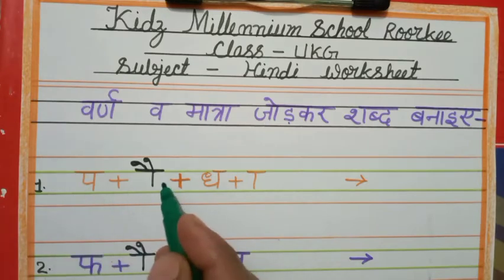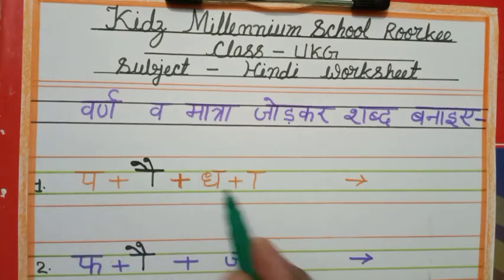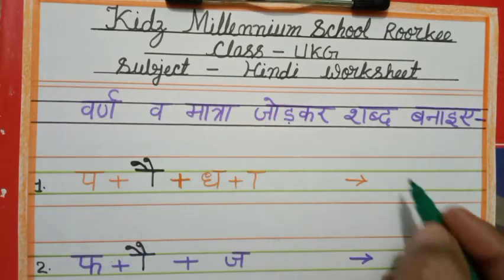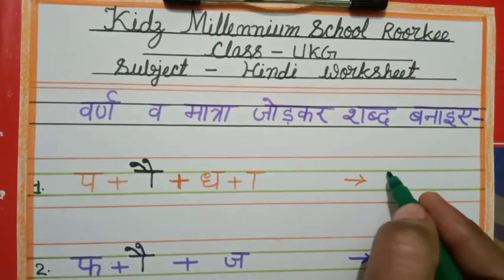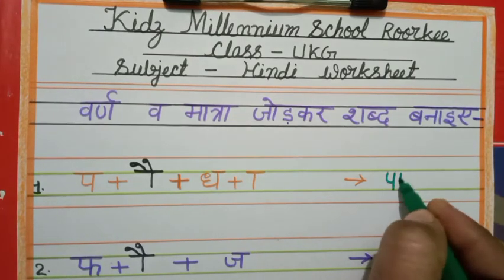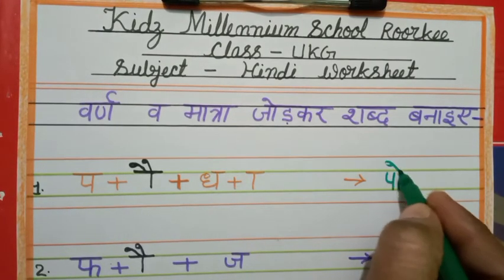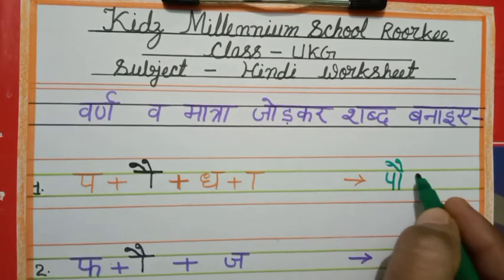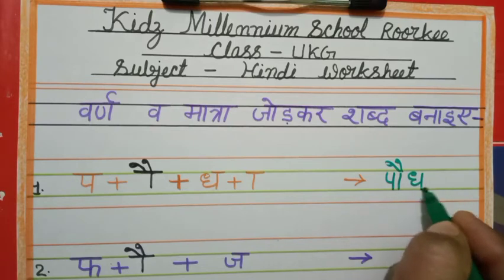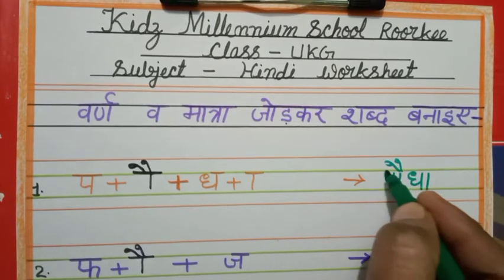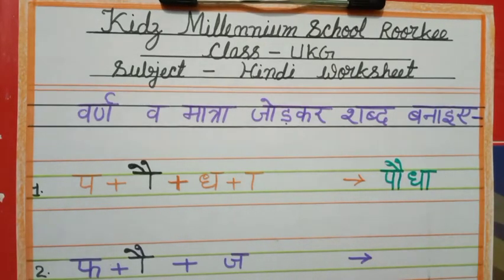Pa, auki matra, dha. What will be formed? Pa + dha. Pa hai, auki matra, dha, auki matra. Pa, dha. Ok?